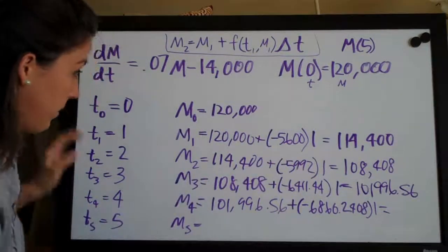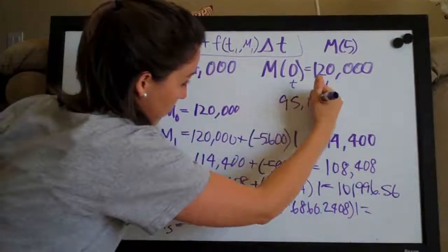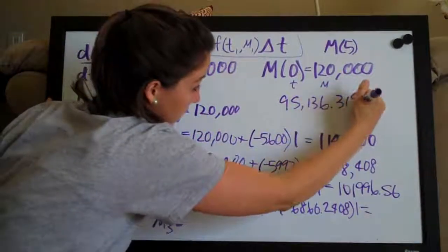So, we get, I'm going to go ahead and write it up here so I can see it, 95,136.3192, notice I'm keeping all my decimal places.